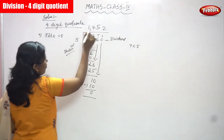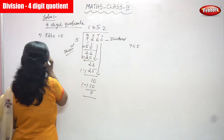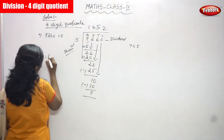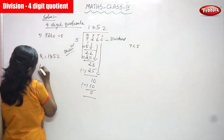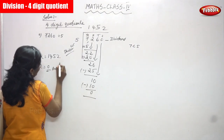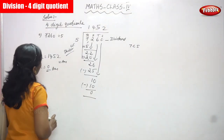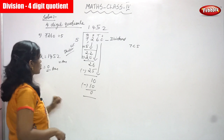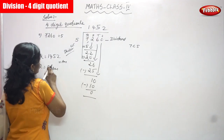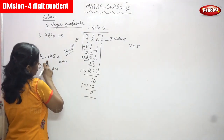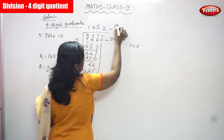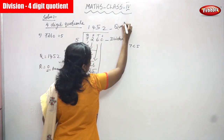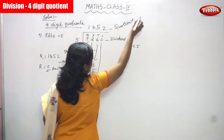The answer is 1452. That means the quotient is equal to 1452. The remainder is zero. This is the answer. So I have told you four-digit quotient — 1, 2, 3, 4 — that is the four-digit quotient. This is the quotient: Q-U-O-T-I-E-N-T, quotient.